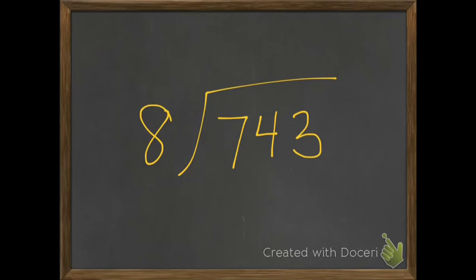So this one, I haven't wrote the facts out for you. But you're always looking at the first two numbers, because my divisor can't go into 7. So I look at the first two numbers. So I'm looking at what number is close to 74 that 8 can go into.